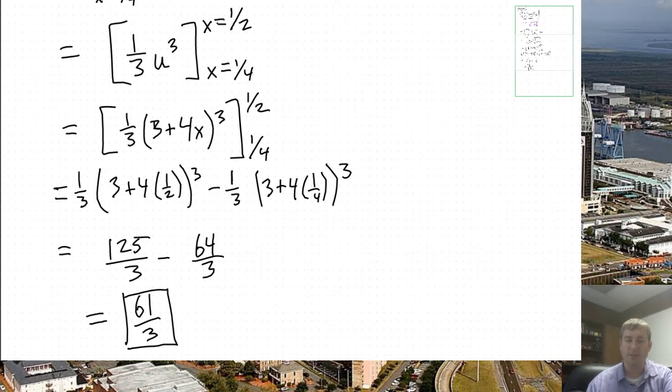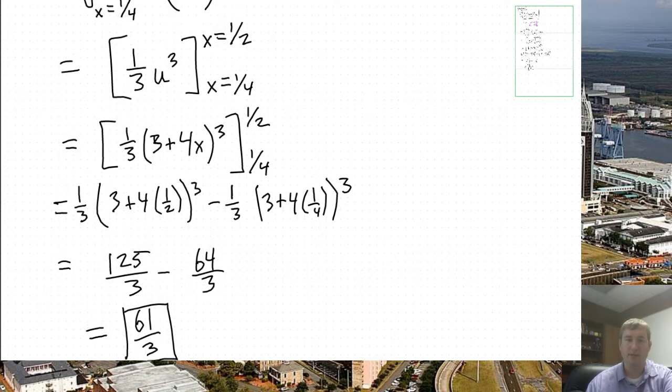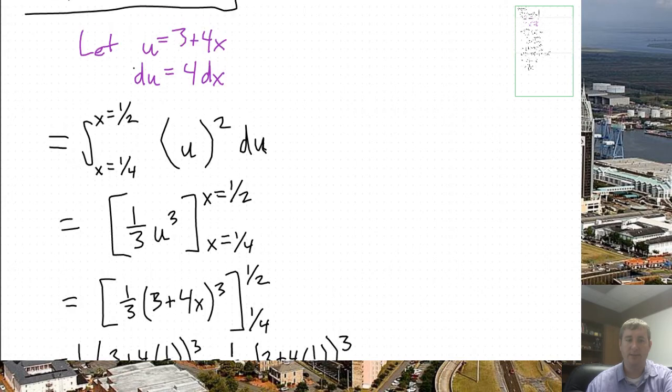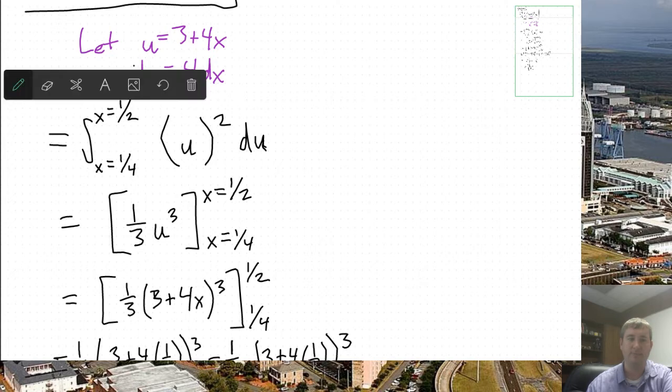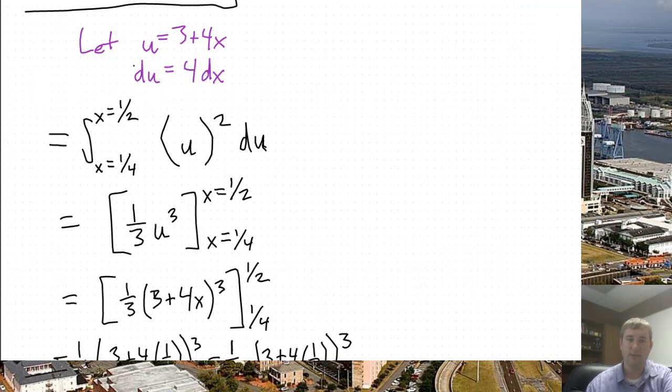And so the alternate method for handling this problem would be to go way back to this point right here. And so what I could do at this point is, instead of rewriting it like so, it's almost the same thing. We'll still get the u squared du. However, I'm going to avoid the x equals 1/2 and x equals 1/4. And what do I mean by that? I'm going to replace those with their corresponding u values.